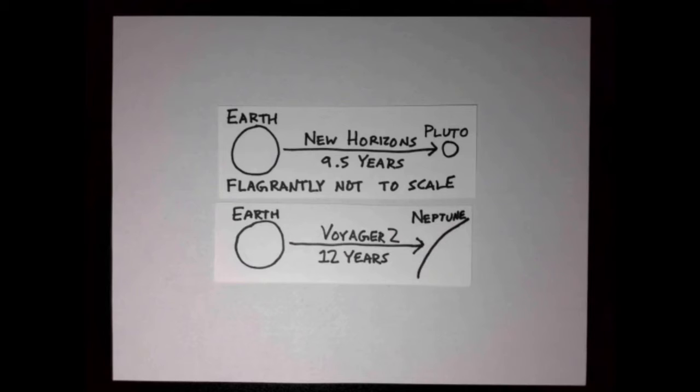New Horizons was, in fact, the fastest probe ever launched from Earth, so 9 and a half years was the express journey. In any case, New Horizons delivered for us detailed images of the surfaces of Pluto and Charon, images of two new moons of Pluto, information on Pluto's atmosphere, and...